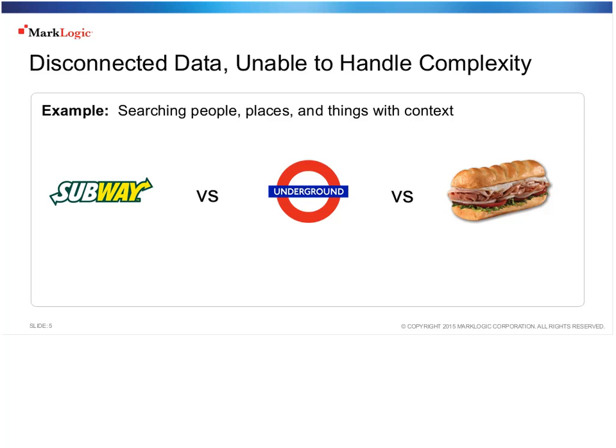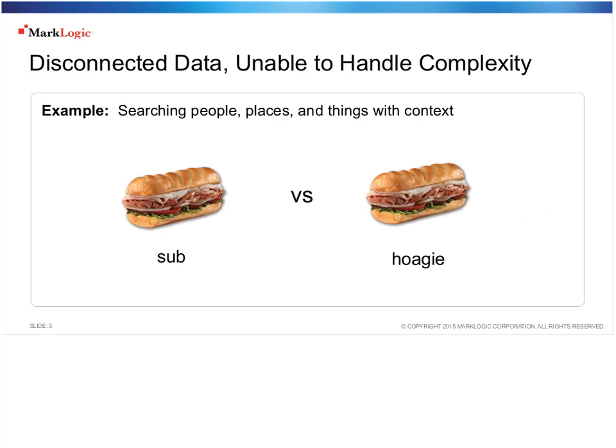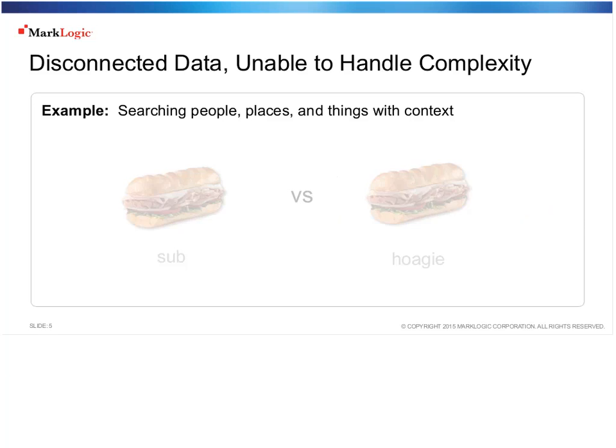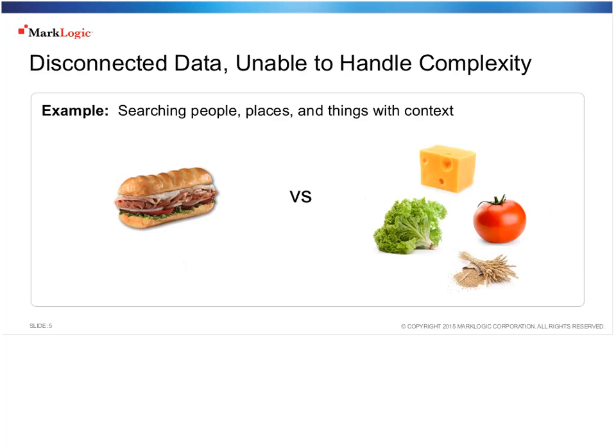In the example above, we have three things that are very different but you would use the same search term 'sub' to search for each one. And when you have a sub and a hoagie, they're obviously the same thing, but how would a computer understand that? We can also compare the parts of a sub — obviously a sub would have cheese on it, and how would a computer understand the context of cheese within the context of a sub versus just cheese standing alone?